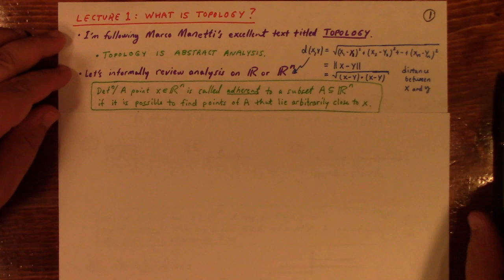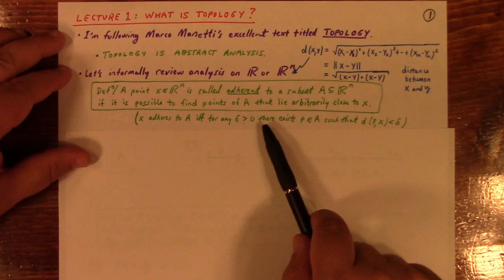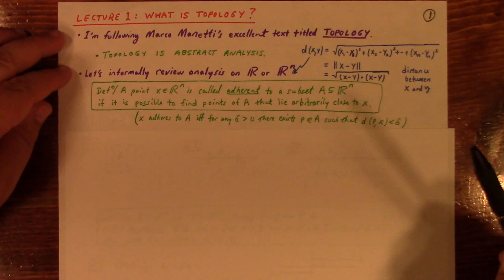Here's the way to state that in epsilon-delta notation. X adheres to A if and only if for any delta greater than zero there exists a point in A such that the distance from that point to X is less than delta. You have to be able to do that for any delta. It's got to be really close.